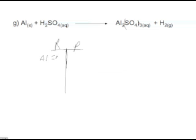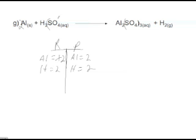Aluminum is equal to 1 on the reactant side. Aluminum on the product side is equal to 2, so I need to place a 2 because 2 is a common multiple — a 2 goes in front of aluminum. Hydrogen is equal to 2; hydrogen on the product side is equal to 2. SO4 is treated as one unit because it's a polyatomic ion. SO4 is equal to 1 on the reactant side, but SO4 on the product side is equal to 3. The common denominator between 1 and 3 is 3.